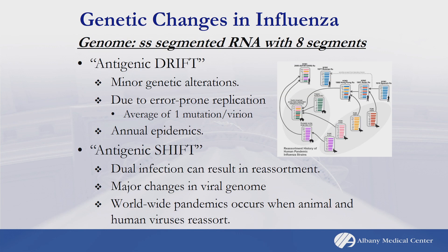Just a quick refresher about how genetic changes occur in influenza. Influenza is a single-stranded RNA genome made of eight segments. Changes occur in a couple of ways. The first is antigenic drift — these are due to minor genetic alterations, because influenza uses an RNA polymerase, and RNA polymerases are error-prone. On average, you get one mutation per variant.